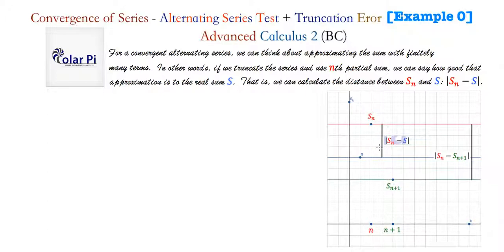So let's say S_{N+1} is here and S_N is here. Then clearly the distance between S_N and S is this. We have an absolute value because it's a distance, and we don't know ahead of time that S_N is above S — it could be below S, in which case S_{N+1} would be on the other side. Now, the distance between S_N and S is less than the distance between S_N and S_{N+1}. That's very important to note here — that's really what you need to take away from this visual.